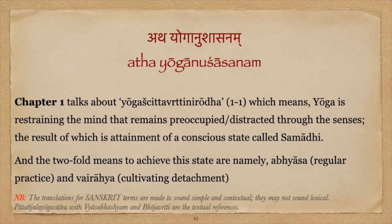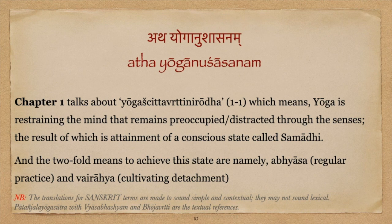The first chapter talks about Yoga Chittavrutti Nirodha, which means yoga is restraining the mind that remains preoccupied or distracted through the senses, the result of which is attainment of a conscious state called Samadhi. And the two-fold means to achieve this state, namely Abhyasa — regular practice — and Vairagya — cultivating detachment.